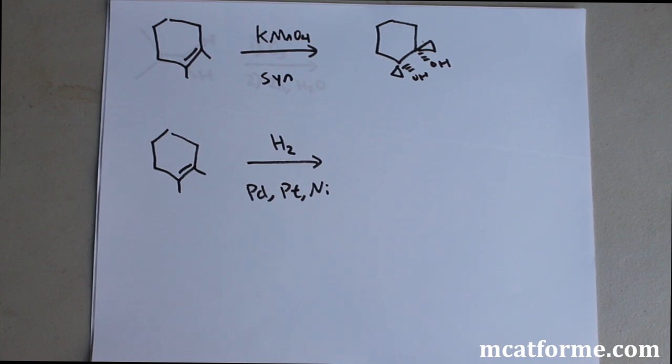Syn addition just means on the same side so it's like a cis addition, you know cis and trans is going to be the cis. We see that they're both going to be facing down, likewise they can both be facing up. There is no preference for up or down, we just know that they're going to be on the same side.